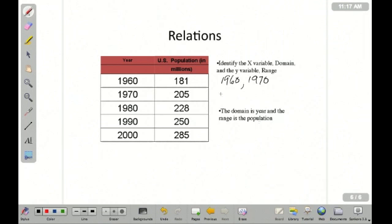And your range is the population, 181, 205 million, 228 million. Incidentally, the reason why your range is considered your dependent variable is because the range depends on the year. The year does not determine the population, the population is determined by the years.